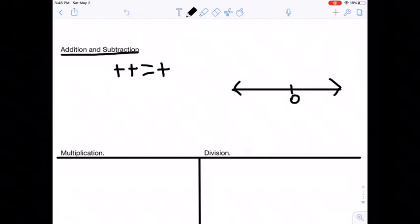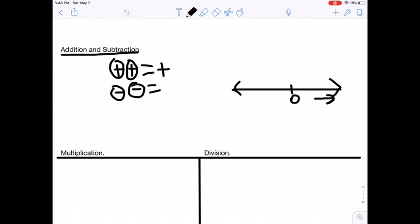Right? Because you're just going further and further up this number line. Now if you had two negative numbers, then you will always get a negative number when you're adding these.